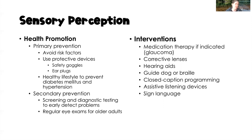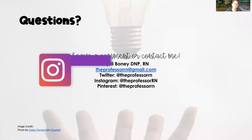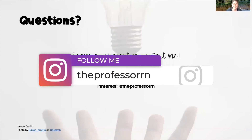Interventions may include medication therapy — particularly for glaucoma — corrective lenses, hearing aids, and surgery to remove cataracts if that's the problem. For clients who are completely or legally blind, interventions may include a guide dog or Braille. For hearing impairments, interventions include closed-captioned programming, assistive listening devices, and sign language.